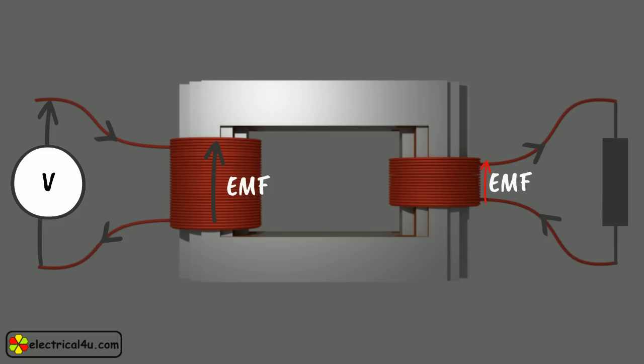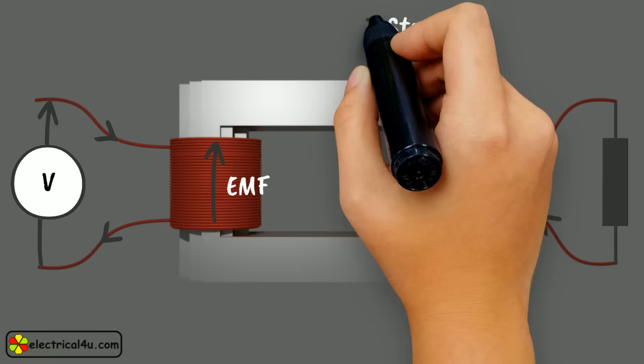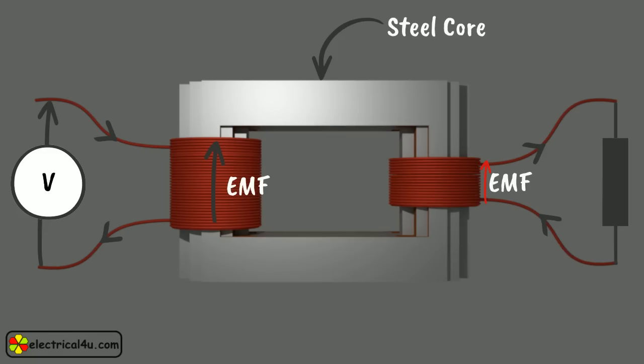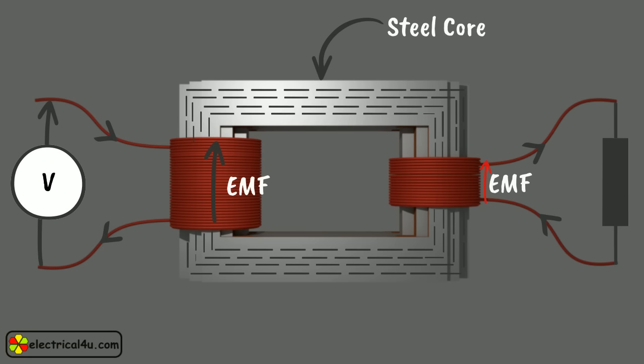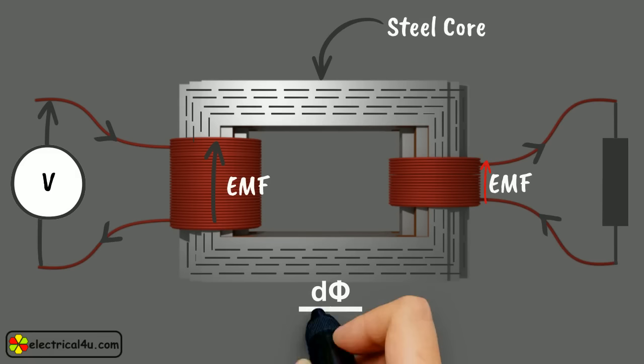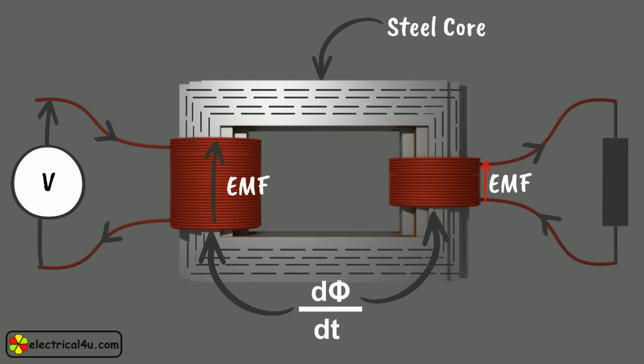This is done by placing a low-reluctance magnetic core in between these windings. Steel is a well-known low-reluctance magnetic material, so we normally use steel for making the core in a transformer. As soon as we place a steel core in between these windings, nearly the entire flux surrounding the first winding will be concentrated inside the core and link with the second winding. As nearly the same flux links with the second winding, the rate of change of flux with respect to time is equal in both windings.